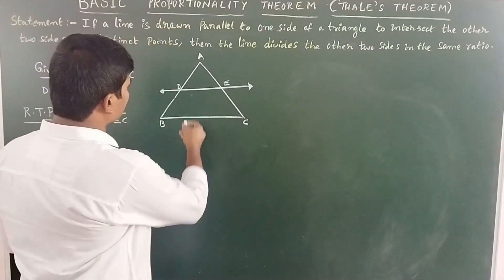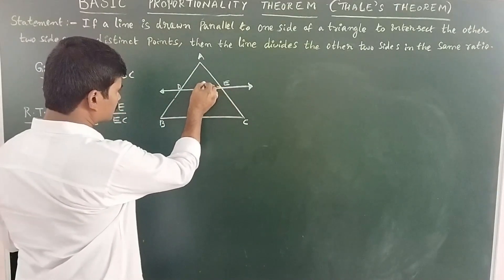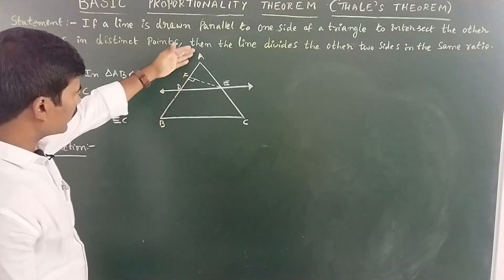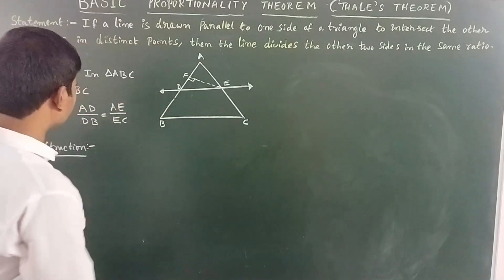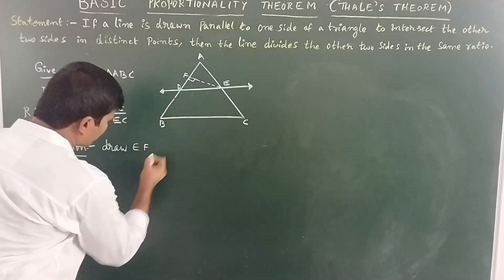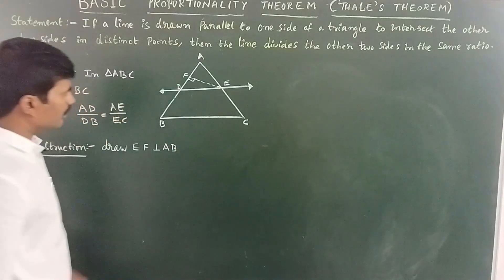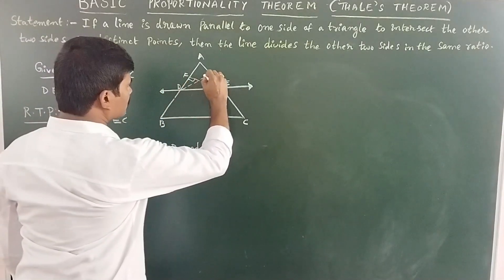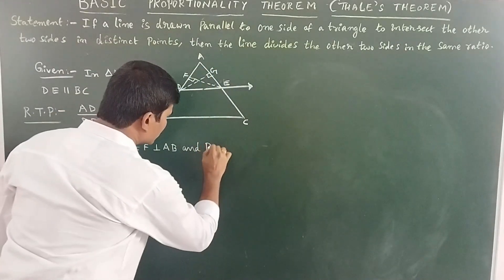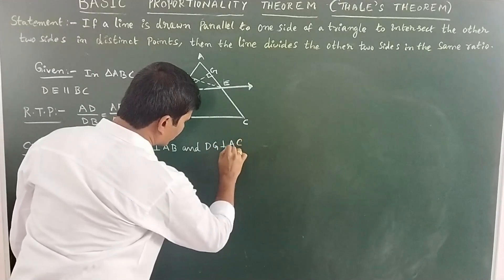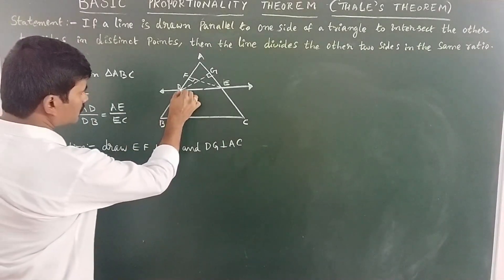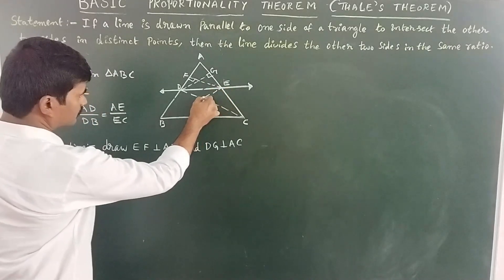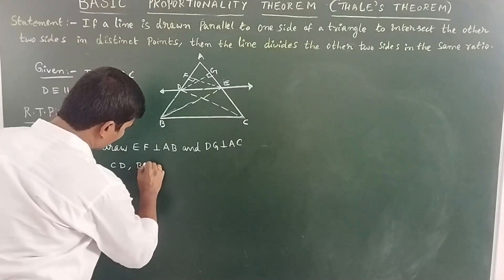Construction: Draw a line EF perpendicular to the line segment AB from E, so EF is perpendicular to AB. Similarly, draw DG perpendicular to AC. Then join CD and BE. This completes the construction.